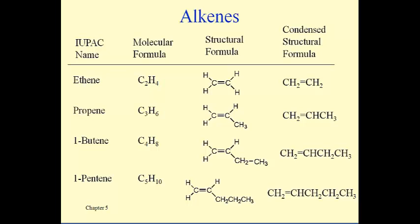Our naming system does a lot of what it has already done — it tells us how many carbons are in a molecule — but the 'ene' suffix means there's a double bond. Starting with four carbons, we need a number in front of the name to tell us where the double bond starts. In 1-butene the double bond starts at carbon one, and in 1-pentene it also starts at carbon one. But these alkenes can have isomers where the double bond is located elsewhere, such as 2-butene or 2-pentene.